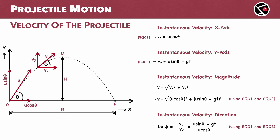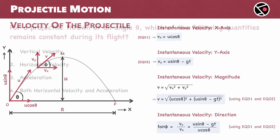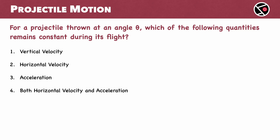With this, we have completed our discussion on velocity of a projectile. Before we wrap up, here is a quick question: for a projectile thrown at an angle theta, which of the following quantities remains constant during its flight — the vertical velocity, the horizontal velocity, the acceleration, or both horizontal velocity and acceleration? The correct answer is both horizontal velocity and acceleration. Remember, the horizontal velocity stays constant at U cos theta, and the acceleration due to gravity, minus G, is also constant throughout the projectile's motion.